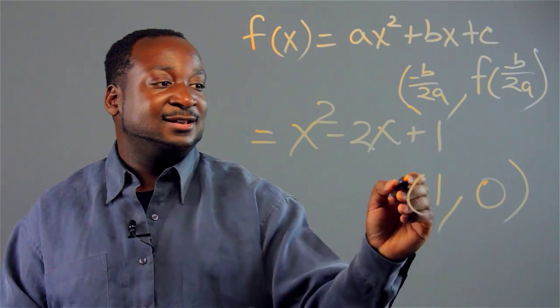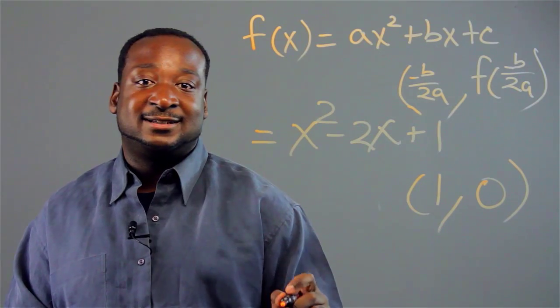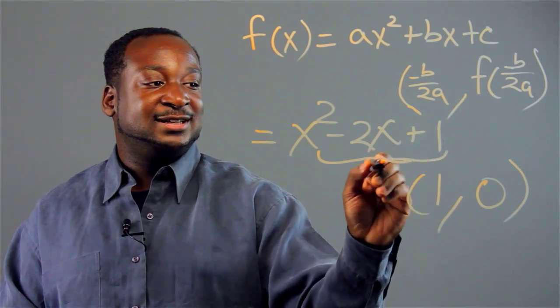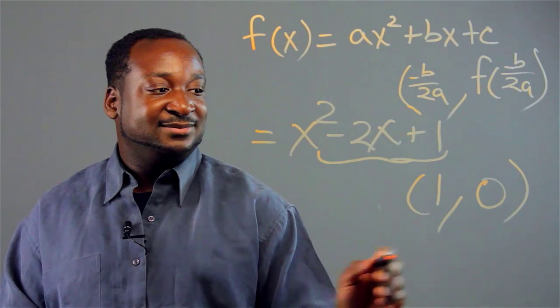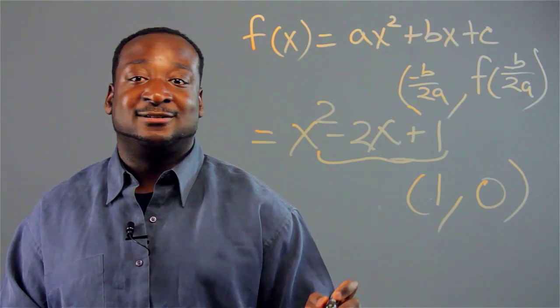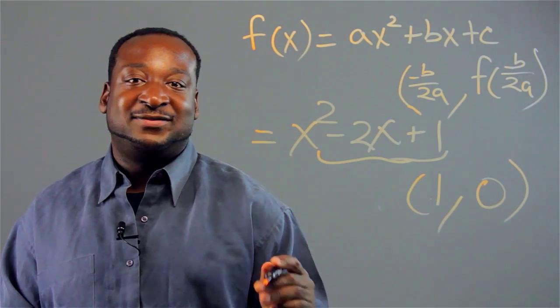So now, our vertex for this function here is going to be at 1 and 0. And that's how you find the vertex.